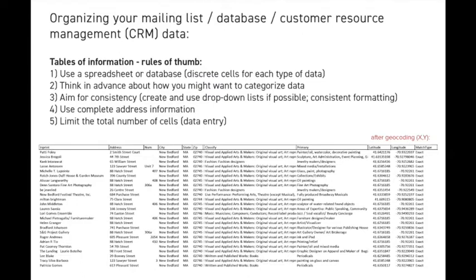Particularly around addresses, I really recommend using complete information from the outset — that means having a different field for the street address, number, city, state, and zip. If you want to put that into a mapping program, whether that's Google Maps or a GIS program, it's going to make it a whole lot quicker. The cool thing is if you put it into Google Maps, they're going to geocode it — find the XY coordinates and convert these lists into points. That's also what GIS does, and there's a process of geocoding that's now built into more and more programs, so there's a lot of backend stuff you don't have to worry about.